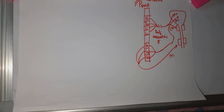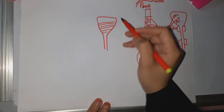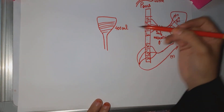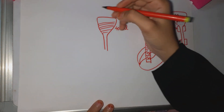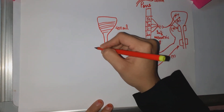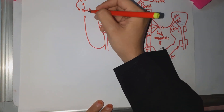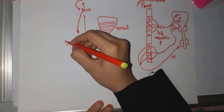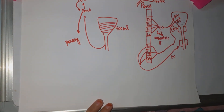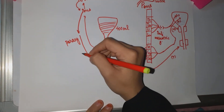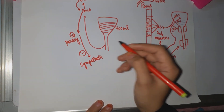When the bladder is full — containing around 400 ml of urine — impulses go from the spinal cord to the pons and then to the cortex. From the cortex, the micturition center of the pons is stimulated, which then stimulates the parasympathetic nervous system, allowing the passage of urine. It also inhibits the sympathetic nervous system as well as the pudendal nerve.